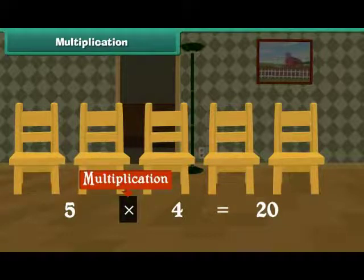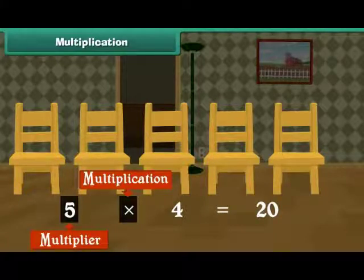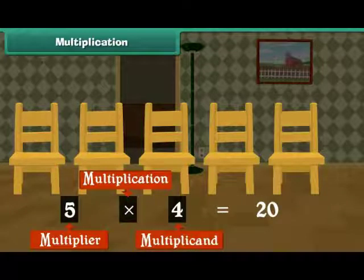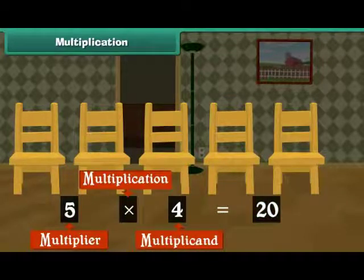The first number, 5, is called the multiplier. The second number, 4, is called the multiplicand. The result of multiplication is called product.